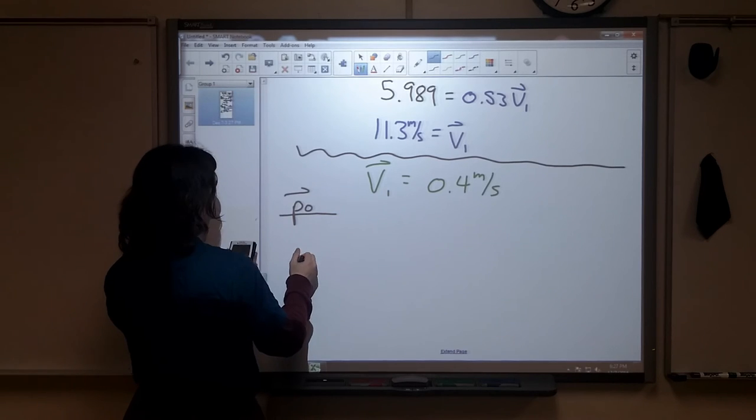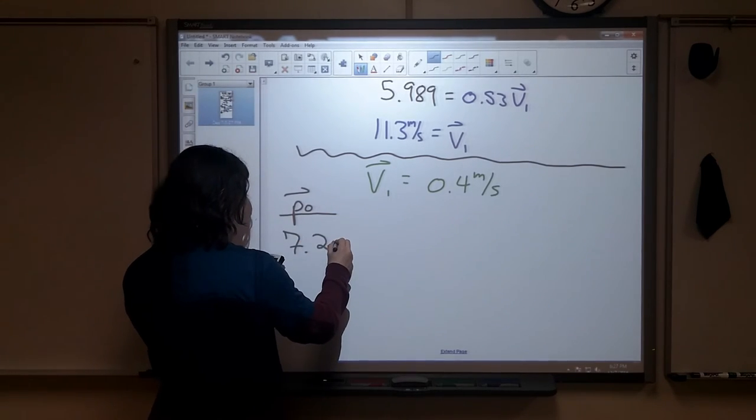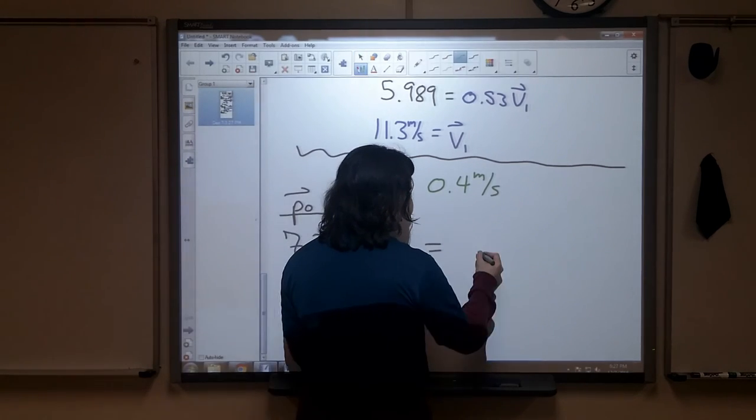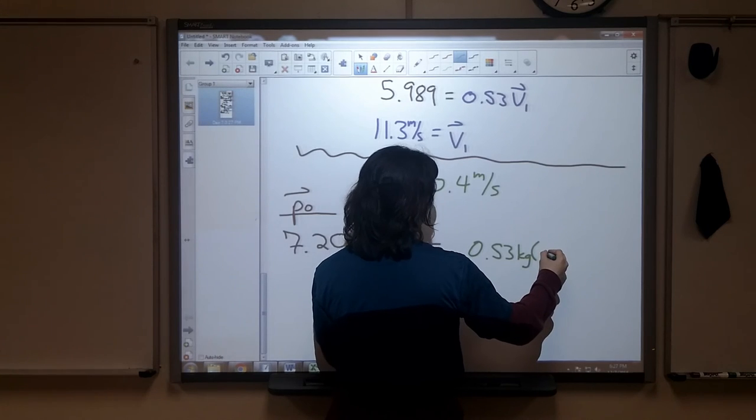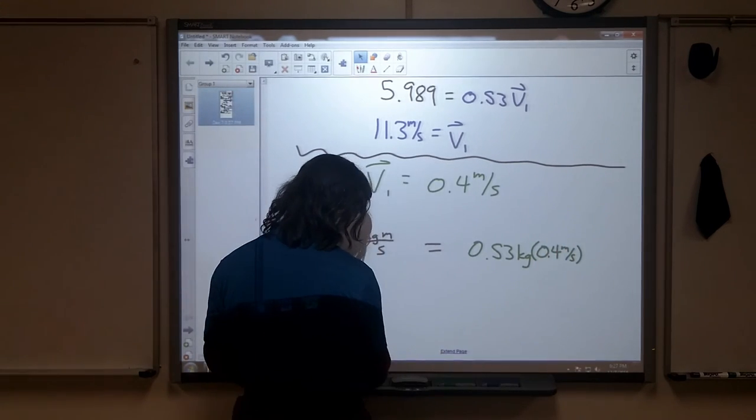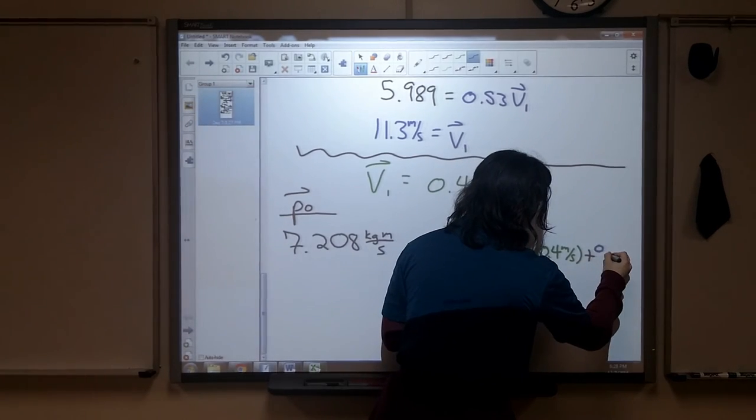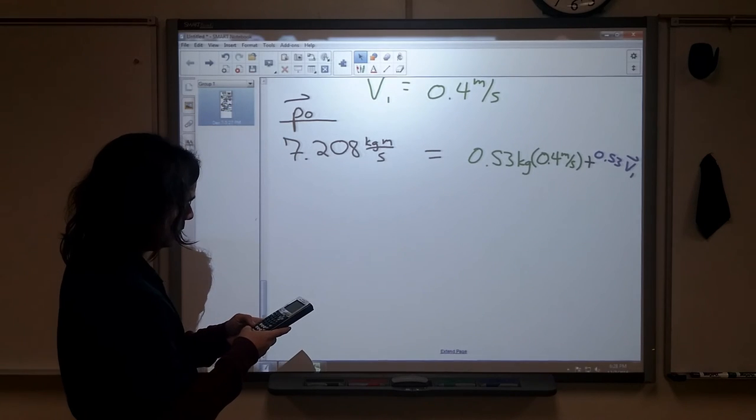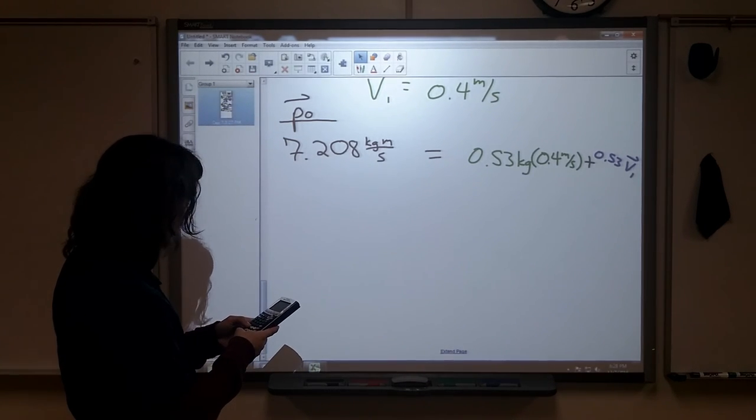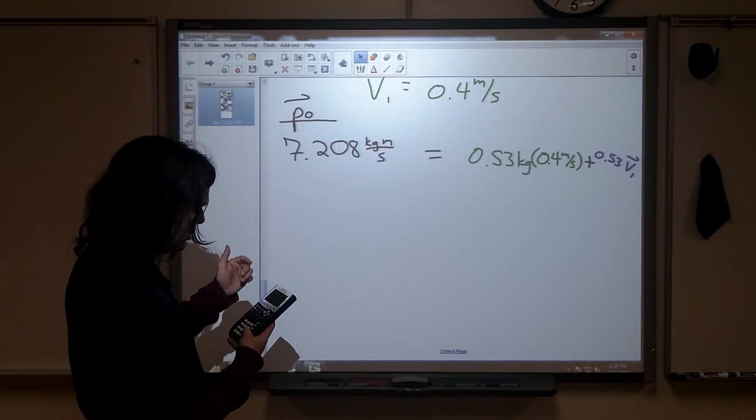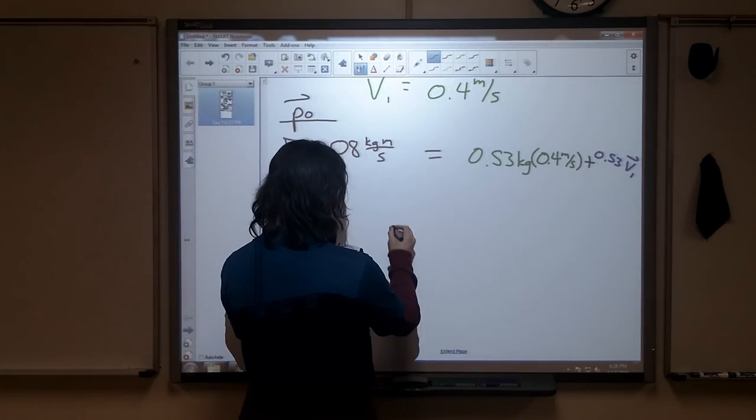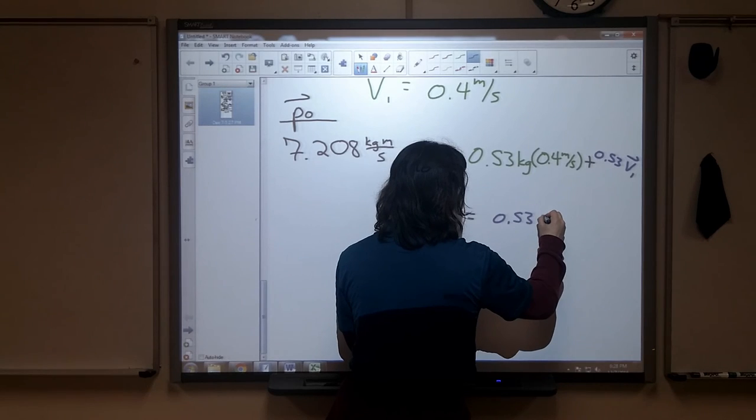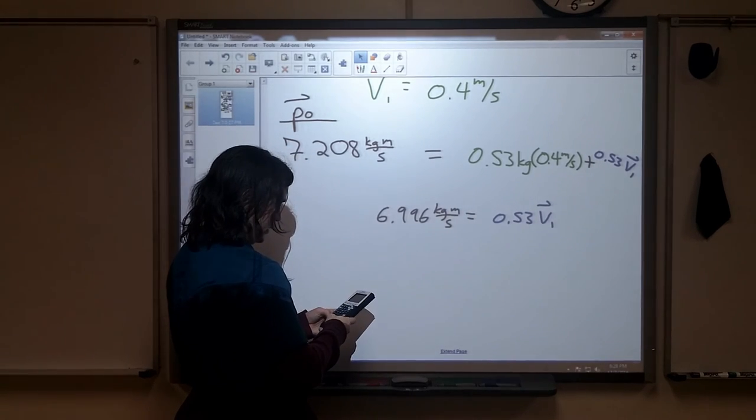Well, once again, no significant external forces. We know, luckily we checked it just a moment ago, that the total momentum that we start off with is 7.208 kilogram meter per second. And that is going to be equal to 0.53 kilograms times 0.4 meters per second plus 0.53 V_1. We go through. I'm going to do this one much more quickly. Let's see, 0.4 times 0.53. It will be just the same as we saw before. 7.208 minus that value. It comes up to 0.212. I end up with the following. 6.996 kilogram meter per second is equal to 0.53 V_final. Pretty much done. Divide this by 0.53.